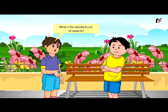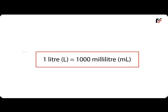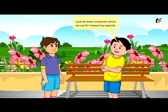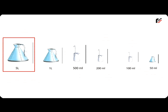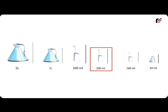What is the standard unit of capacity? Litre is the standard unit to measure capacity, and 1 litre is equal to 1000 millilitres. Look at some containers which we use for measuring capacity: 5 litres container, 1 litre container, 500 mL container, 200 mL container, 100 mL container, 50 mL container.